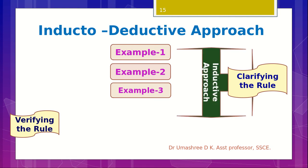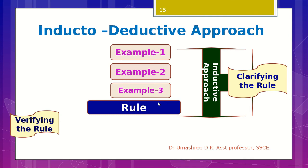By doing this, the teacher helps learners to clarify the rule. At the end of providing examples, students formulate the rule, concept, or property. The teacher provides examples and learners formulate a rule, concept, property, or principle. This is the inductive aspect — examples to rule — which helps learners to clarify the rule they are going to learn.